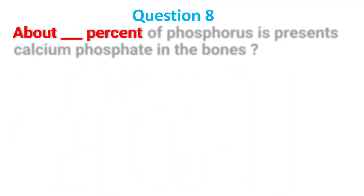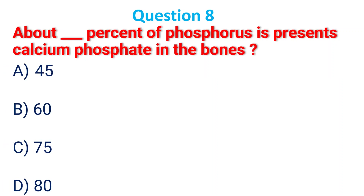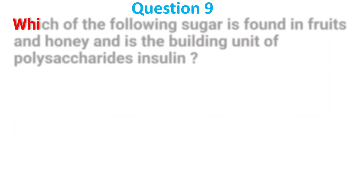About dash percent of phosphorus is present as calcium phosphate in bones. A. 45; B. 60; C. 75; D. 18. The answer is 18.